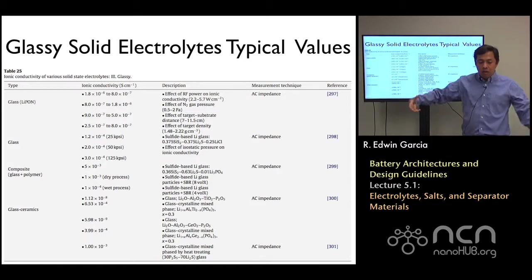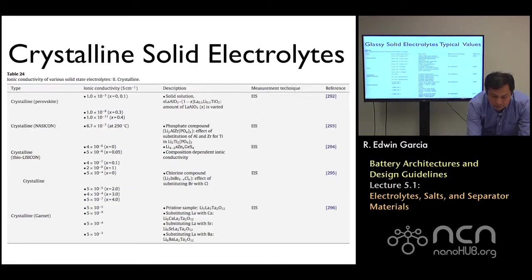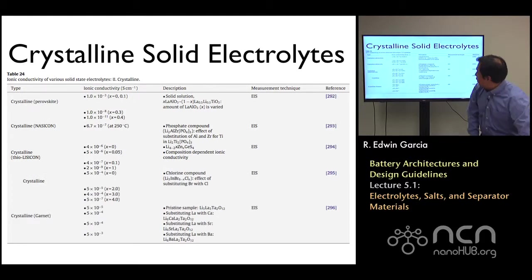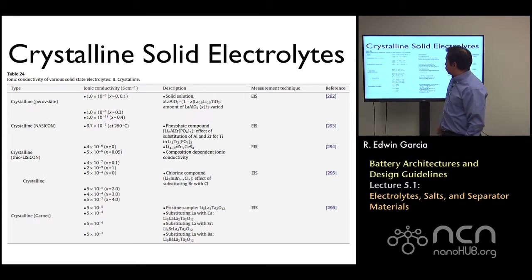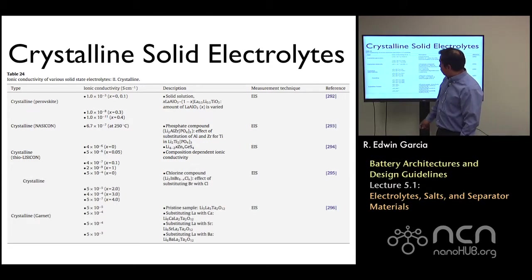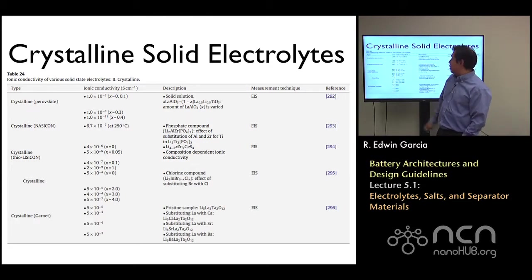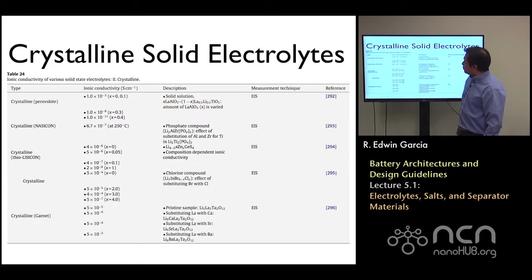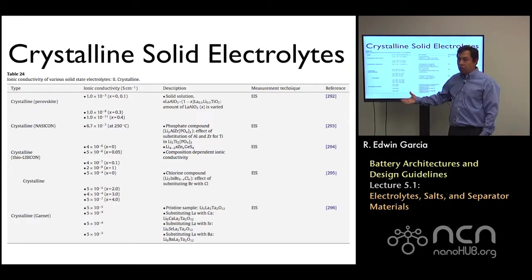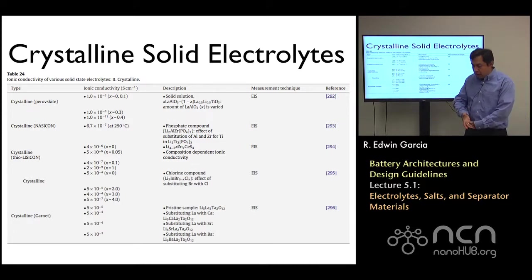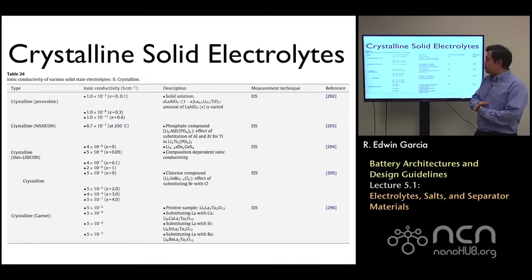For crystalline solid electrolytes, depending on what the crystal structure is and the orientation of the system, you can go from 10^-3 to 10^-9 in their contribution. There's a lot of work going on here, and people are always looking for more materials that have large pathways through which lithium can diffuse.